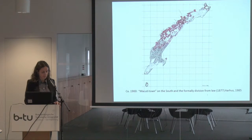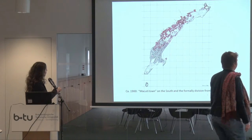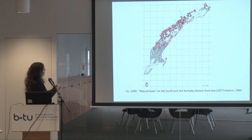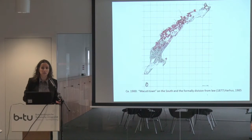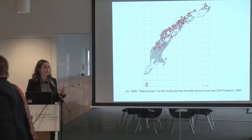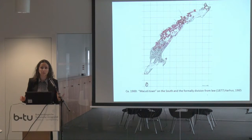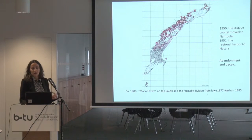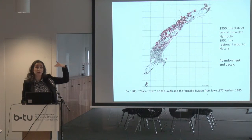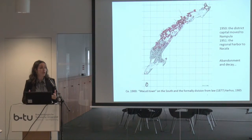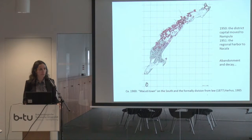The Makuti town, located in the south part of the island, is mostly built — 99% — with Paliotas, local traditional architecture using traditional techniques and traditional materials. After this, the district moved to Nampula, the harbour moved to Nacala in the north where it was easier to manoeuvre with big ships, and the city fell into abandonment and decay.